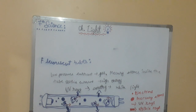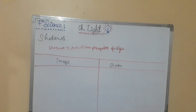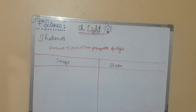After that, the topic is shadows, light, and images. Shadows are formed due to the property of rectilinear propagation of light. Now we will learn the comparison of shadows and images. Light was covered in the first part of this chapter.